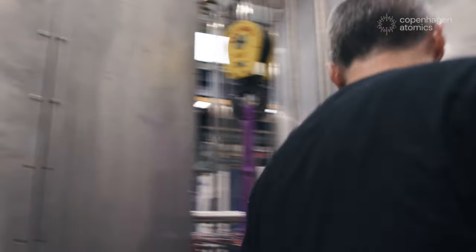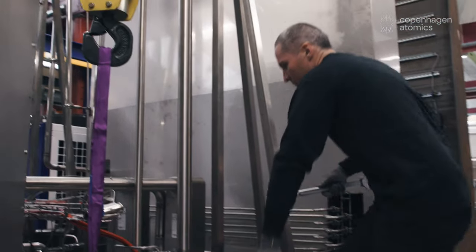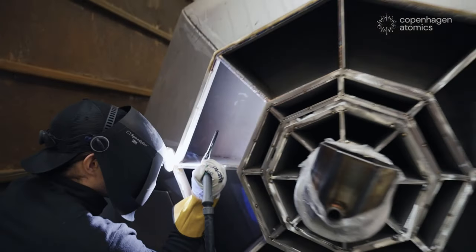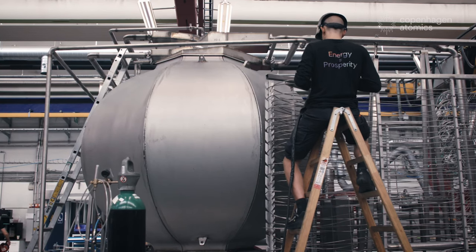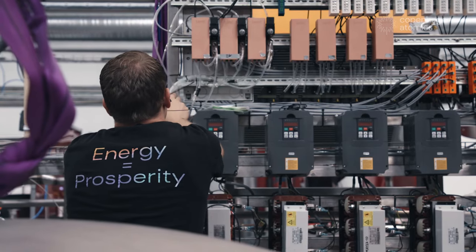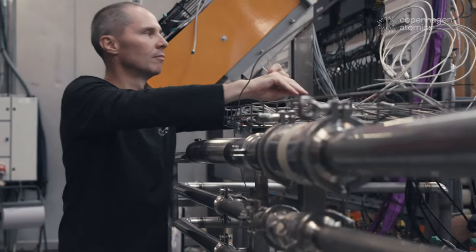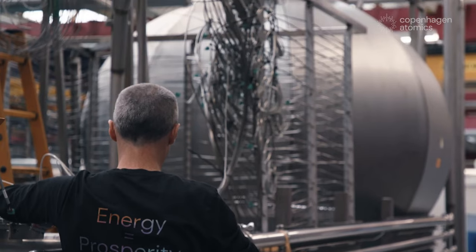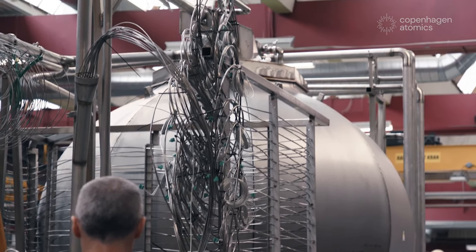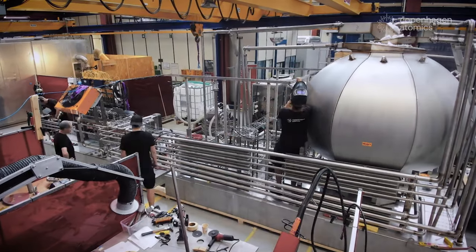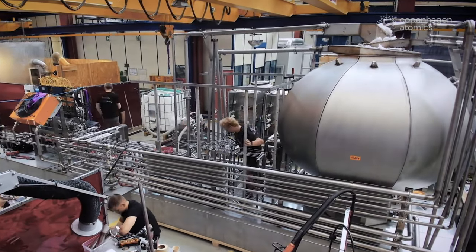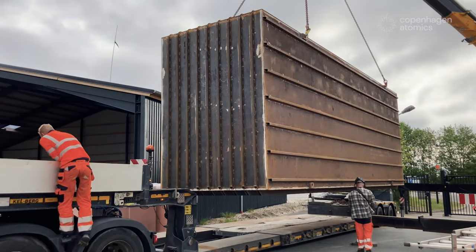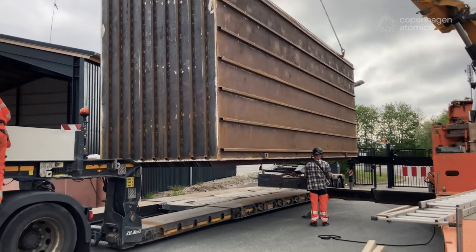A molten salt reactor has many advantages over a conventional reactor. It is safer as it operates at low pressure and has a negative temperature coefficient, which means that if the temperature rises, the reaction slows down. It is also designed to have a freeze plug, which is a valve that melts in case of a power failure and drains the liquid salt into a passive cooling tank, where it solidifies and stops the reaction.